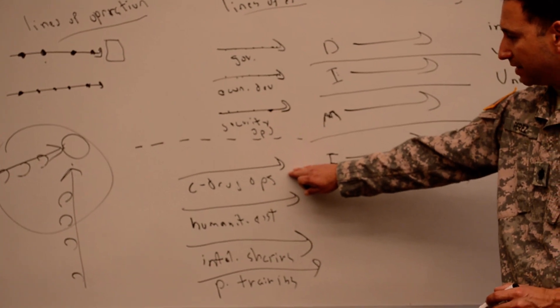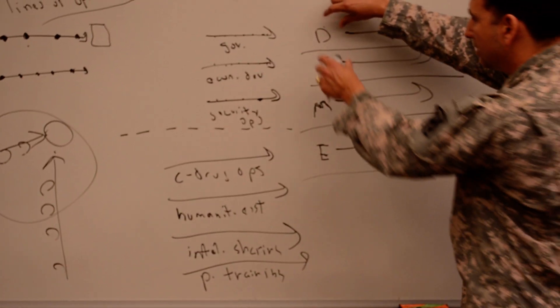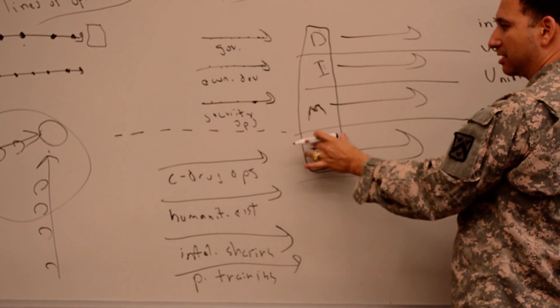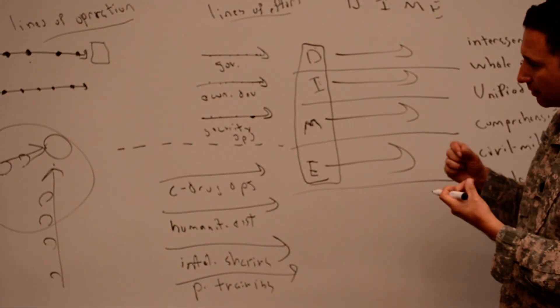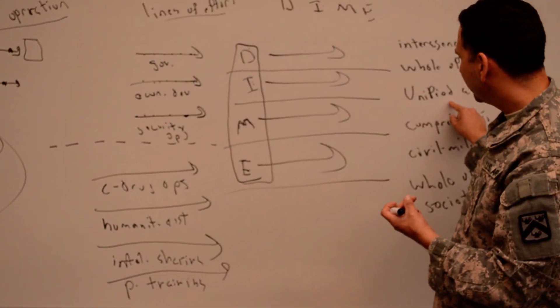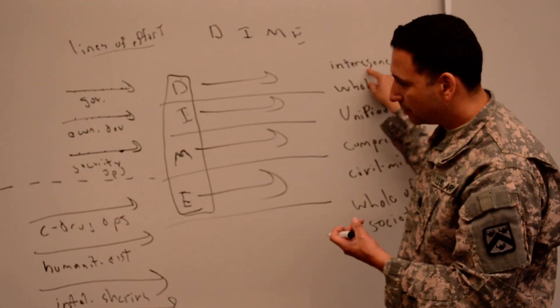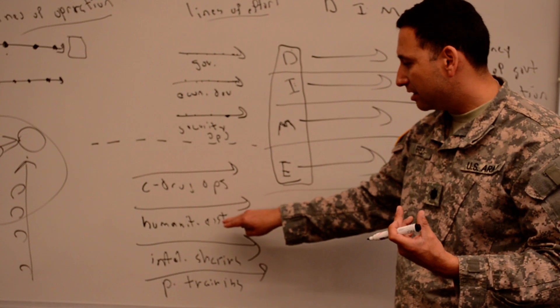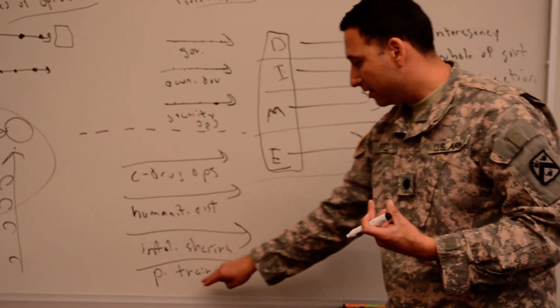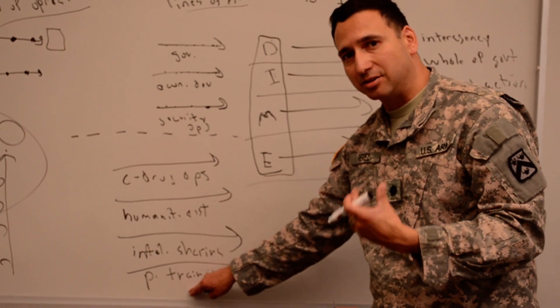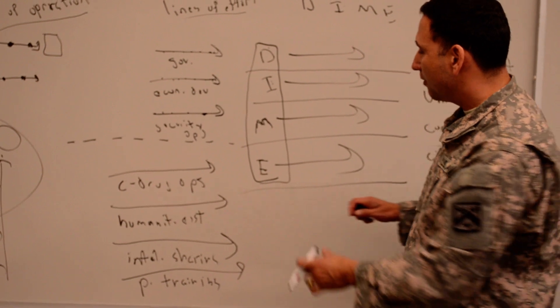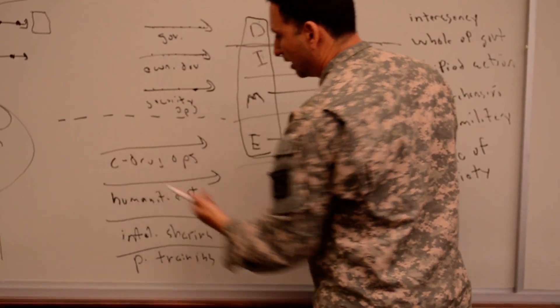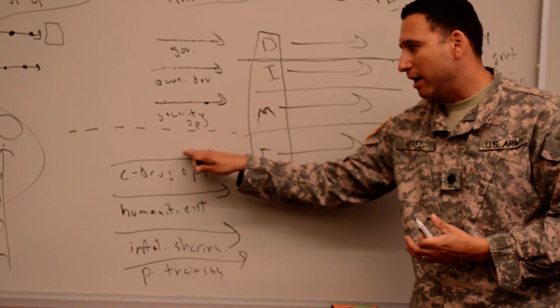Now these lines of effort facilitate ways of combining the various means that we have here. These are means. These are strategic means according to the doctrine. What we want to do is figure out ways of combining them in different ways so that we have whole of government approaches, unified action approaches, interagency approaches. Counter-drug operations is an interagency operation. You have several different governmental agencies cooperating together. The same with humanitarian assistance, the same with intelligence sharing. And if we do it right, it's the same thing with partner training. If we're trying to teach this interagency ethos to other countries. So what we want to do is stay away from the DIME, which silos the different means, and adopt lines of effort that integrate the different means in broad ways to accomplish end states.